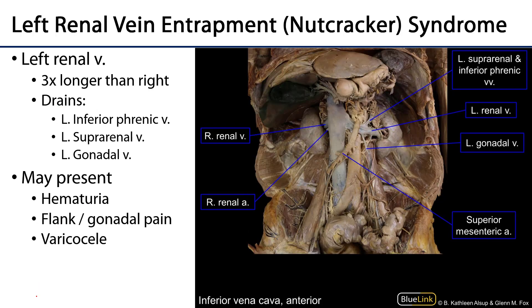Now let's discuss some of the grossly visible veins, because this is a fascinating story. One very prominent vein of the abdomen is the inferior vena cava, which receives blood from the lower limbs and pelvis, some abdominal viscera directly, and some indirectly after it's gone through the hepatic portal system. It also receives blood from the body wall. The kidneys drain directly into the caval system via right and left renal veins. The left renal vein is exceedingly longer than the right renal vein.